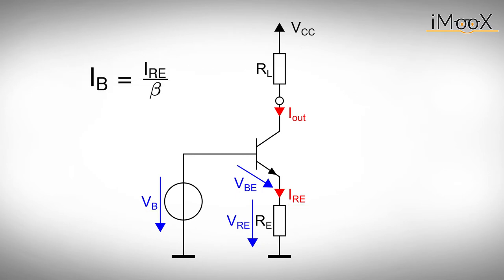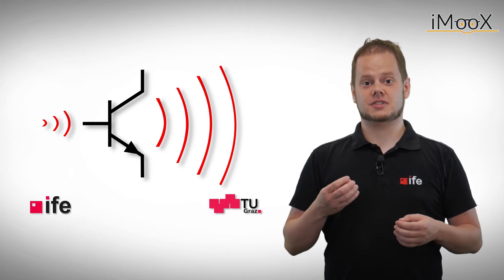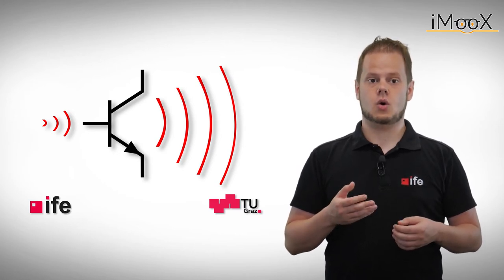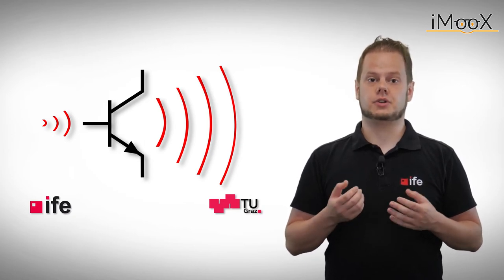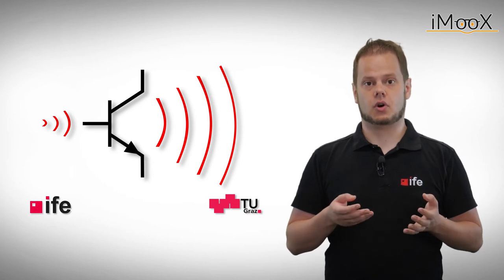The base current is obtained via the current gain beta. With the currents flowing through base and emitter, we can solve for the collector or output current I out, which equals IRE times 1 minus 1 over beta. The last term, 1 over beta, can be neglected and we can state for the output current I out equals IRE. This current does on first glance not depend on the load RL, which meets the requirements of a current source. We can also adjust the output current by either changing the voltage VBE or the resistor RE.